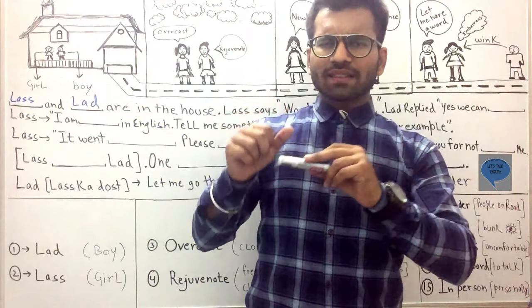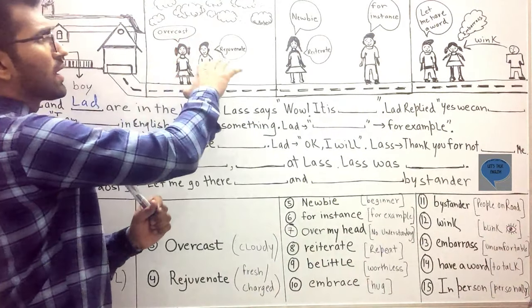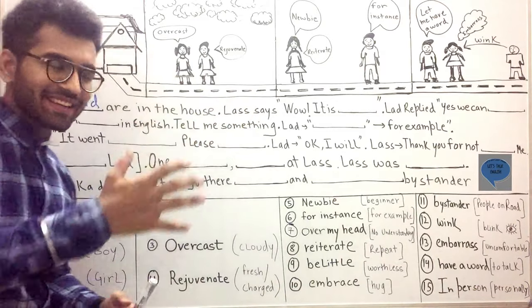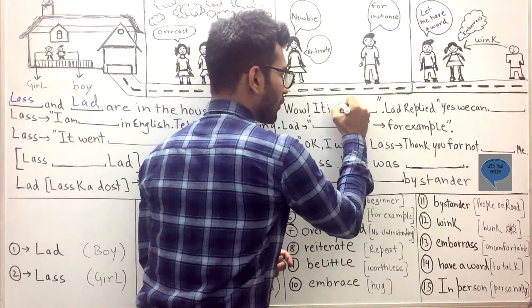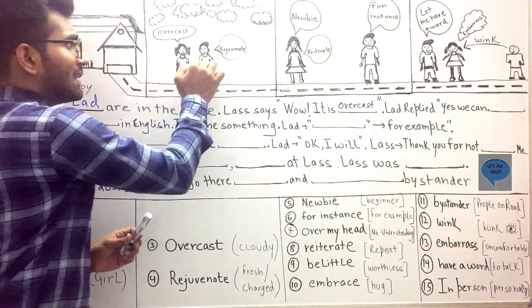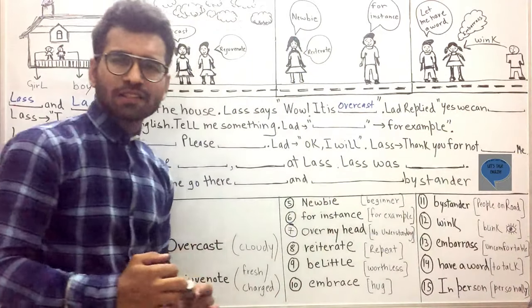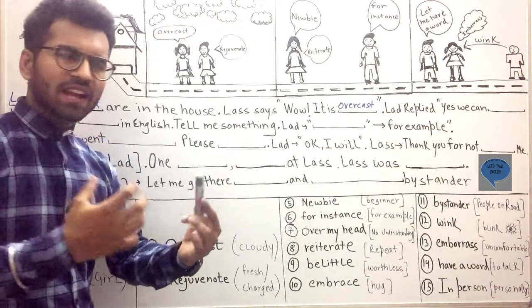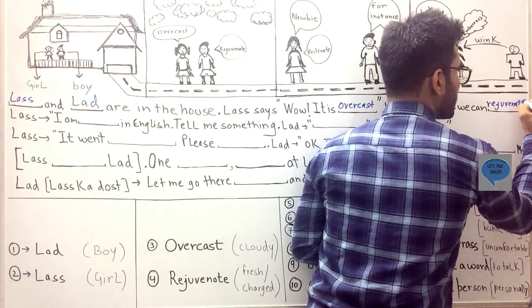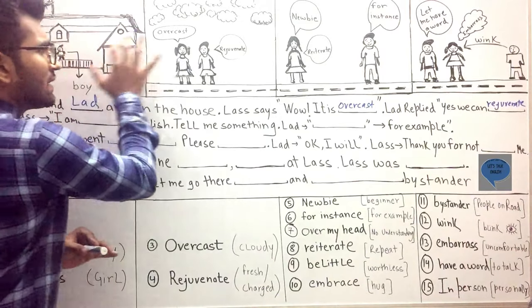what happened is lass told lad let's go outside. When they went outside, they saw that clouds have come. It's cloudy. So what lass says - lass just says wow, it's overcast. And overcast gives me the sense of cloudy. As lad came to know that it's overcast, it's cloudy, he replied that yes we will be able to rejuvenate. So the word over here would be rejuvenate, and rejuvenate gives me the sense of being charged up and energetic one more time. These two pictures have given me four words: lad, lass, overcast, rejuvenate.